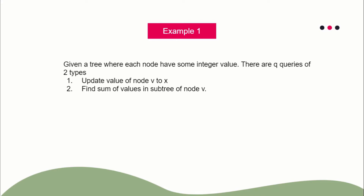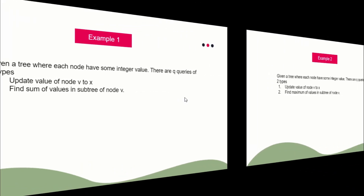After applying the Euler tour technique, the tree is converted into a simple array. Since we now have an array, we can apply point update and range sum. To find the subtree sum, we apply range sum, which we can solve using Fenwick tree, segment tree, or even prefix sums if there are no updates. So on these kinds of problems, we flatten the tree first. The node being updated is a point update, and finding subtree sum becomes a range sum. I'll explain this in the next lecture.